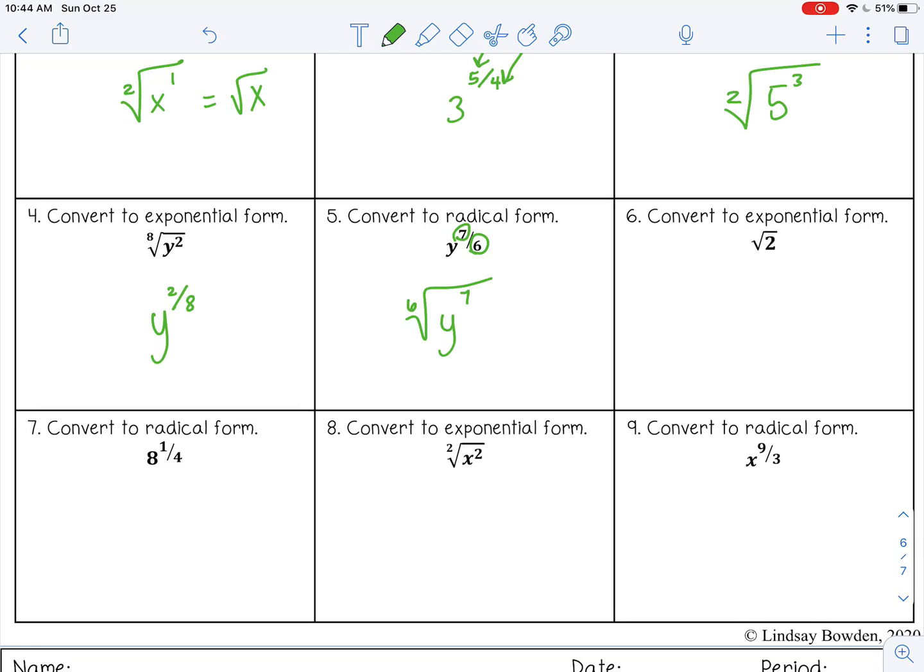And then number 6, convert to exponential form. Now, this one doesn't have a root, so it's understood to be 2. And it doesn't have an exponent, so it's understood to be 1. So the square root of 2, I can write 2 to the 1 half power.